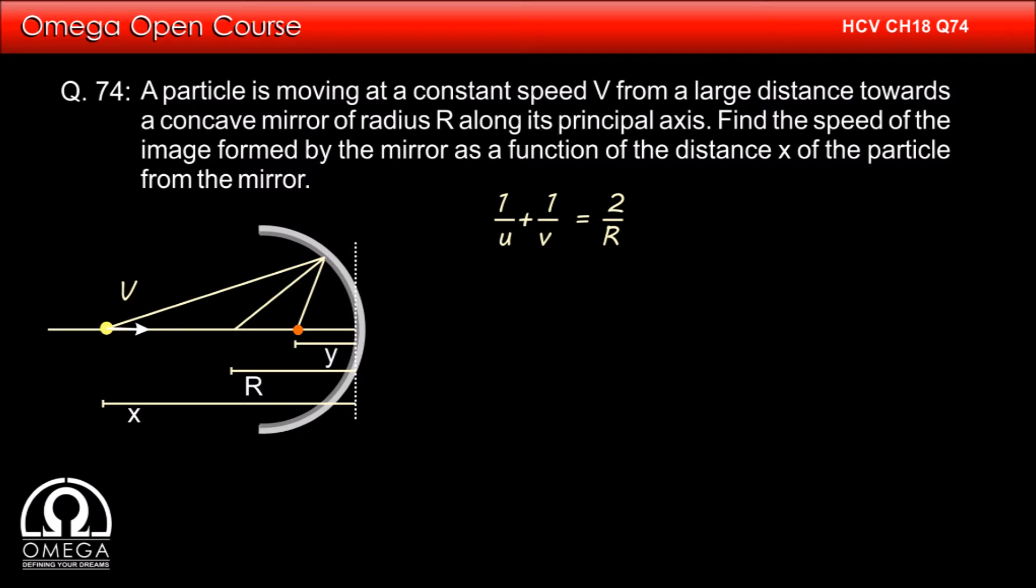Since the object is in the same direction from which the incident ray is coming, the position of the object is negative. Also, since the mirror is concave, its radius of curvature is negative. So we have to put minus x in place of u and minus r in place of r.